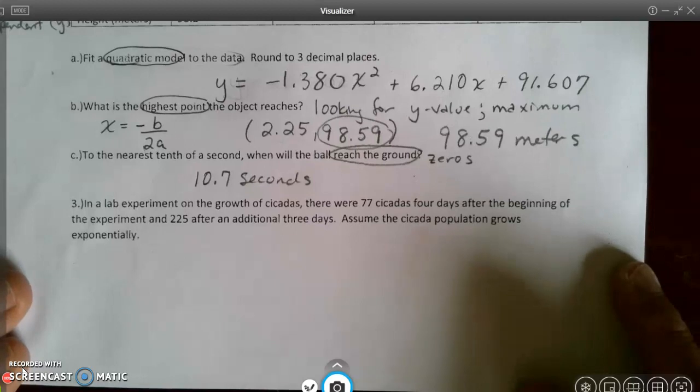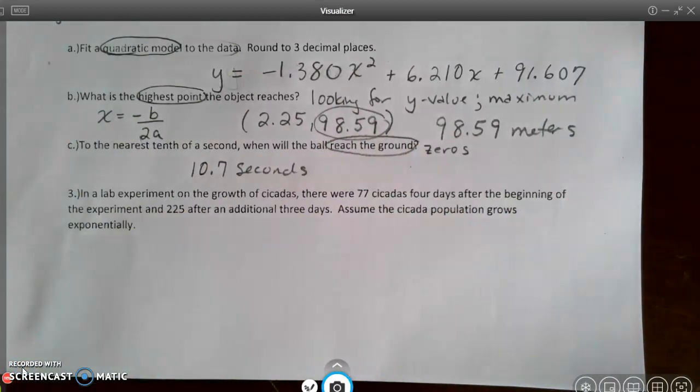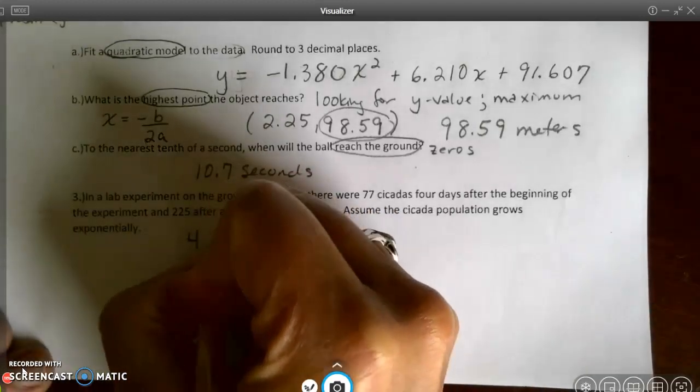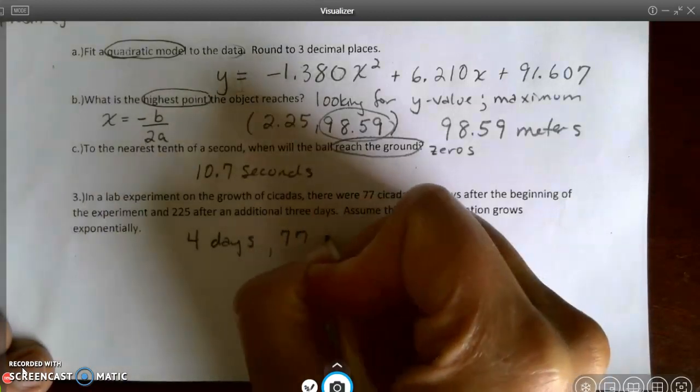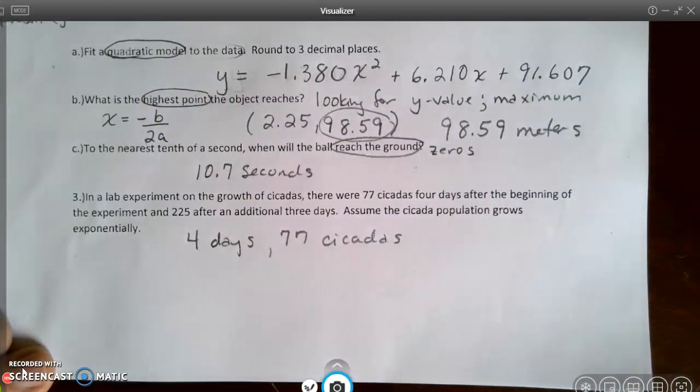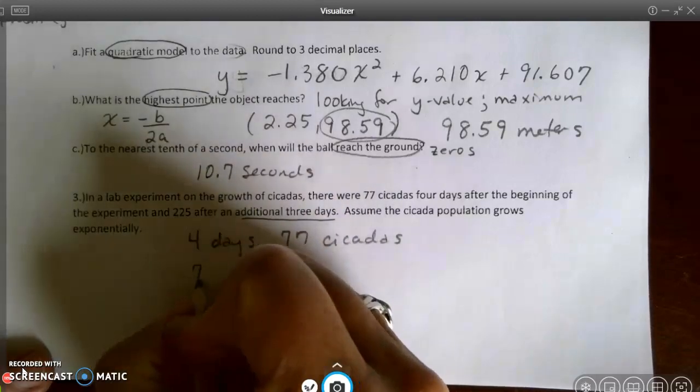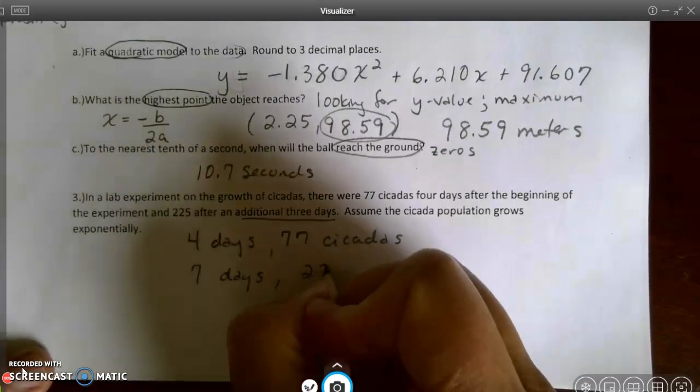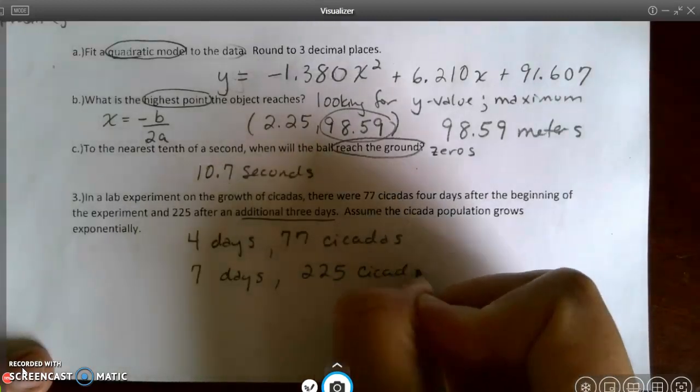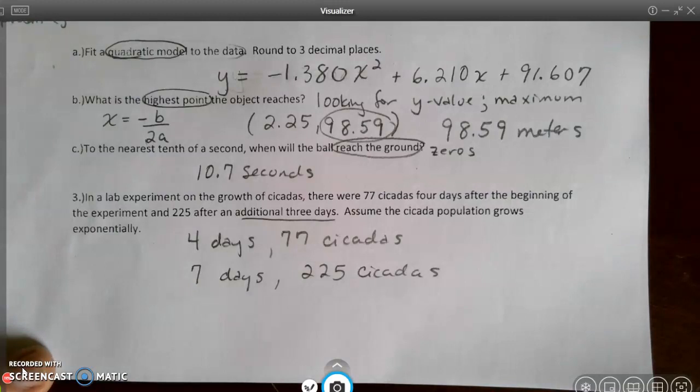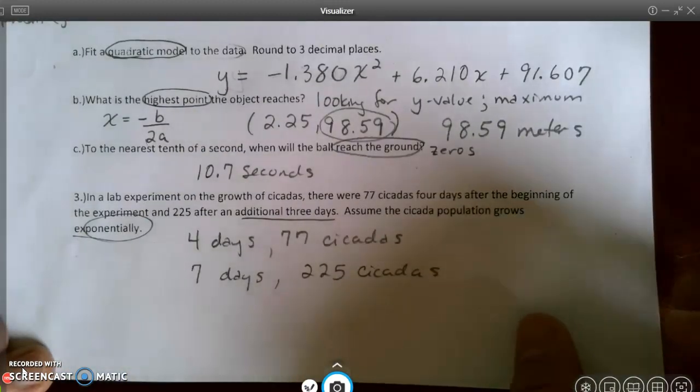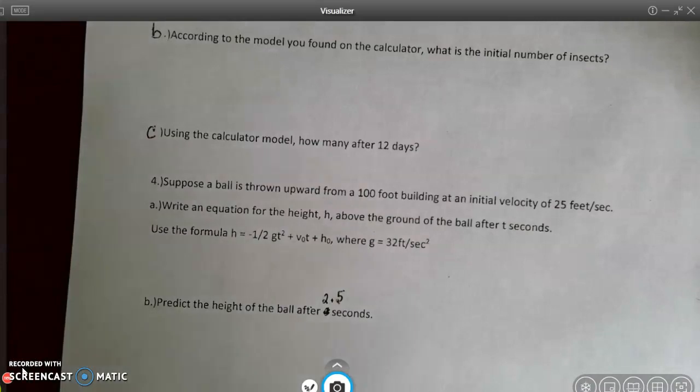All right. Let's look at our next question. It says, in a lab experiment on the growth of cicadas, there were 77 cicadas four days after the beginning of the experiment. So at four days, I have 77 cicadas. And 225 after an additional three days. So that would be at seven days. I have 225 cicadas. Well, I'm getting lots of cicadas, aren't I? Assume the cicada population grows exponentially. All right. So that's the information I have.